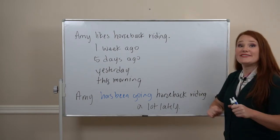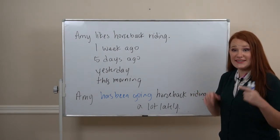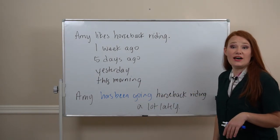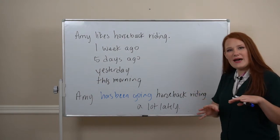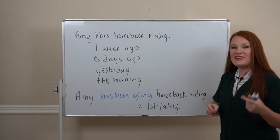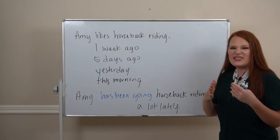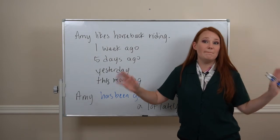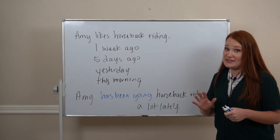So present perfect continuous: we use it for an action that started in the past and it's still happening, or something that's been happening a lot recently. There is a little overlap with present perfect, but in general, present perfect continuous is a shorter period of time — like minutes or maybe days — while present perfect is a longer period of time, like years or months.